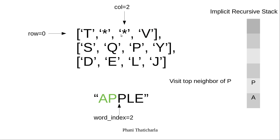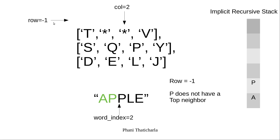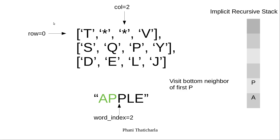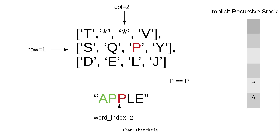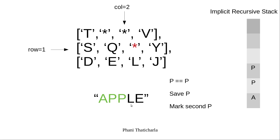Now we have visited the left and right neighbors. We want to visit the top neighbor — row is minus 1, so this is out of bounds, and we backtrack. Now we visit the bottom neighbor. We increment the row by 1. Is P equal to P? This is true. So we save this letter P, mark it with a star, and increment the word index by 1.